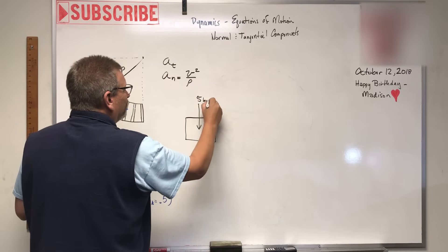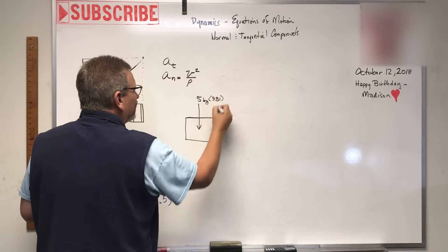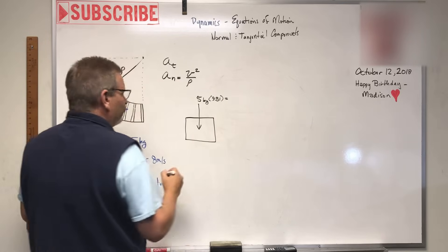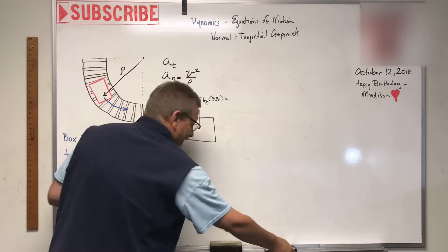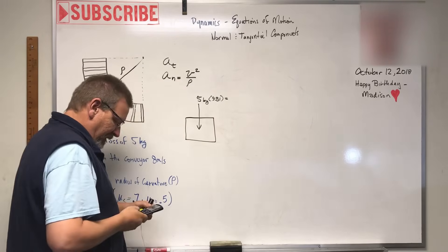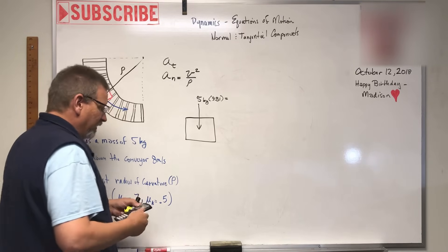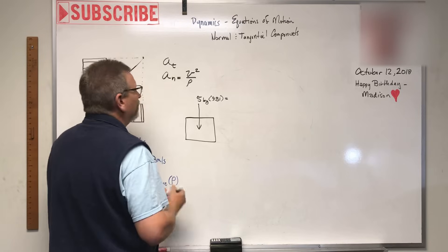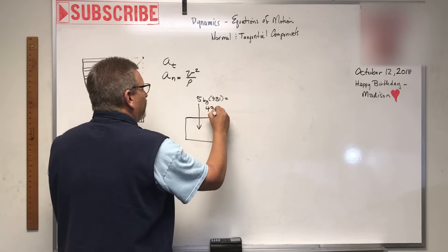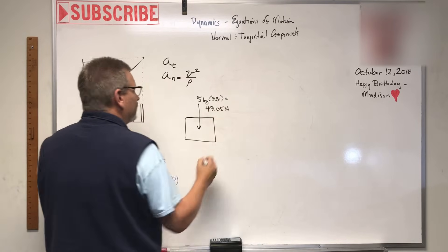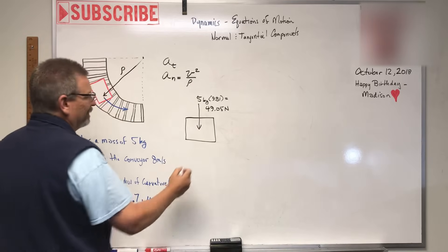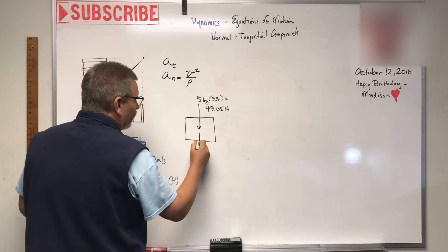Here's the box. What does it weigh? Five kilograms times 9.81 - that'll give it to me in newtons. Five times 9.81 equals 49.05 newtons.